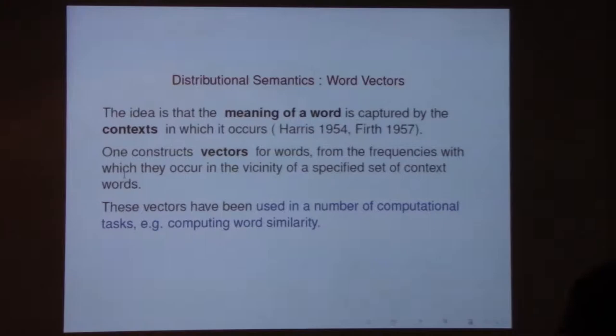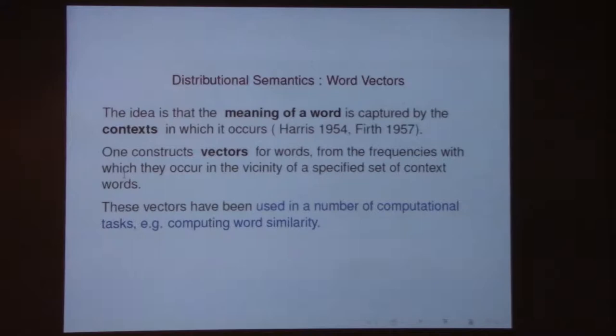You pick some fairly frequent words and use them as a basis to think about all the other words — again, fairly frequently occurring words — and you have meaningful data. But that choice of basis: you sort of first tabulate the frequencies of all the words and then pick somewhere in the middle of that range. You fix the range and the rest is done by the computer.